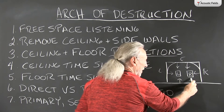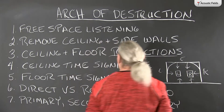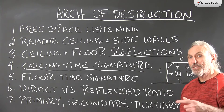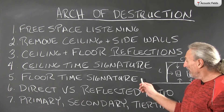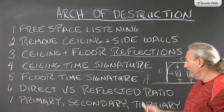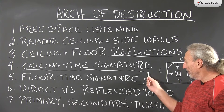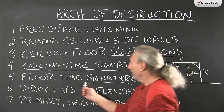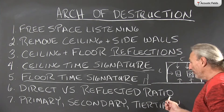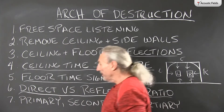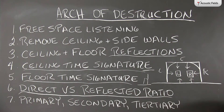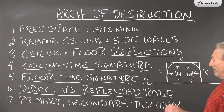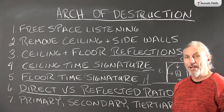The floor also contributes to sound quality, so we have to work with the time signature of all these reflections. The ceiling to the floor is one of the most critical because we are sitting in our chair on the floor — that boundary surface is critical — and the ceiling is the next closest distance above the chair. So we have the floor and ceiling time signature. It is always a balance between the direct sound from our loudspeakers and the reflected energy from the room.